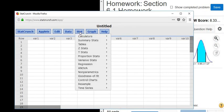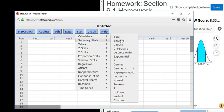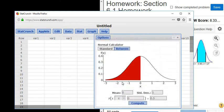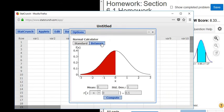Then we go to Stat, Calculators, and you go to Normal. And there's a button here that says Between. So you want to click on the Between button.